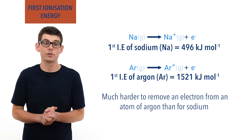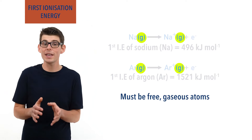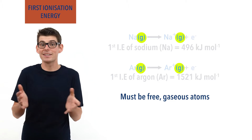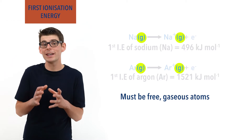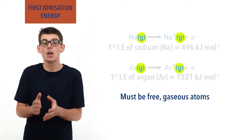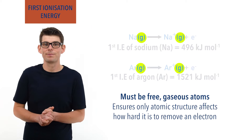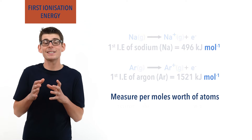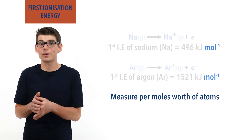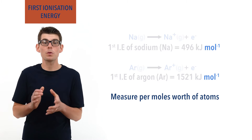When measuring first ionization energies, atoms have to be in the gaseous state to ensure that they are free and there is no interaction with other atoms, such as through bonding. Any interactions would affect the energy needed to remove an electron, meaning the values measured wouldn't be based solely on the atomic structure of the atom. We measure in terms of moles as it simply isn't realistic to measure the energy needed to remove only one electron from one atom — instead we take an average value for a mole's worth of atoms.